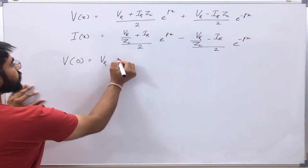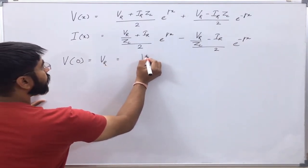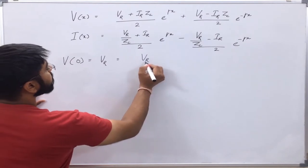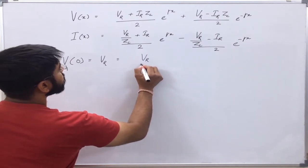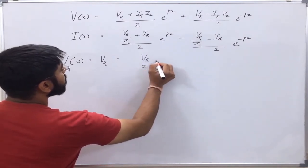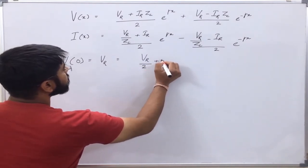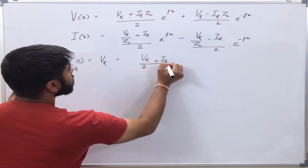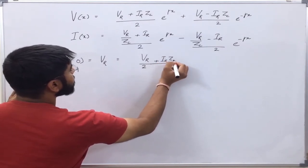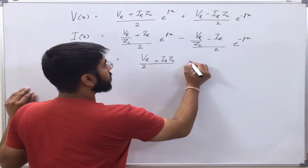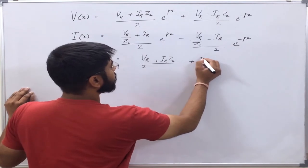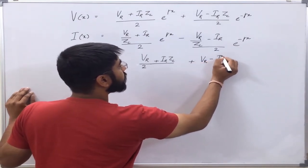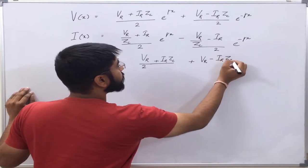Vr at x equals 0, that is at the receiving end, is equal to Vr by 2 plus Ir·Zc, plus Vr minus Ir·Zc.